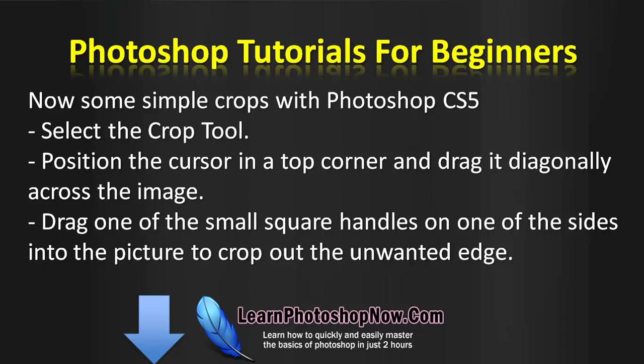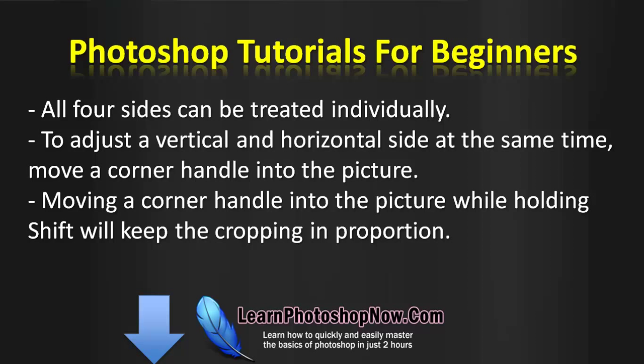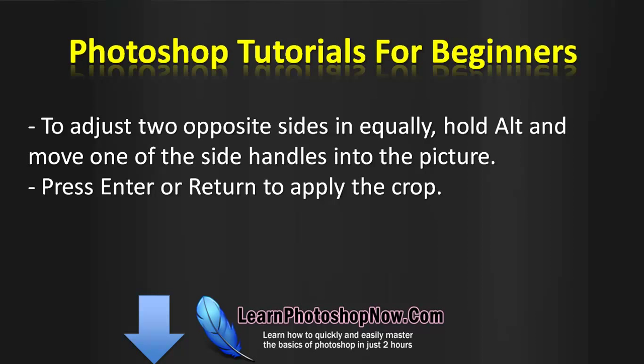Now some simple crops with Photoshop CS5. Select the crop tool, position the cursor in the top corner and drag it diagonally across the image. Drag one of the small square handles on one of the sides into the picture to crop out the unwanted edge. All four sides can be treated individually. To adjust a vertical and horizontal side at the same time, move a corner handle into the picture. Holding Shift while moving a corner handle keeps the cropping in proportion. To adjust two opposite sides equally, hold Alt and move one of the side handles into the picture. Press Enter or Return to apply the crop.